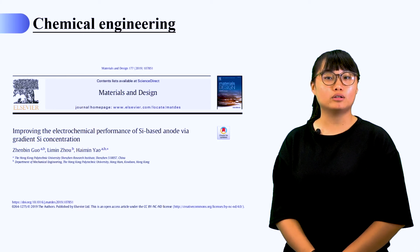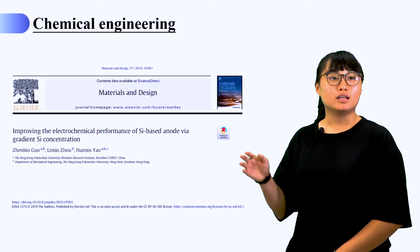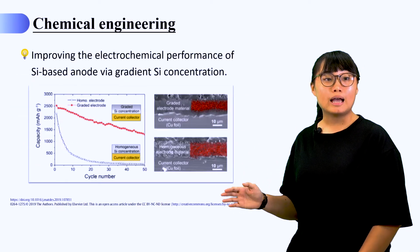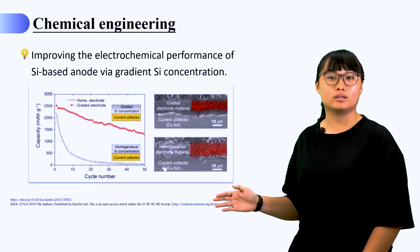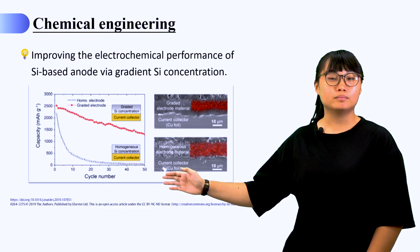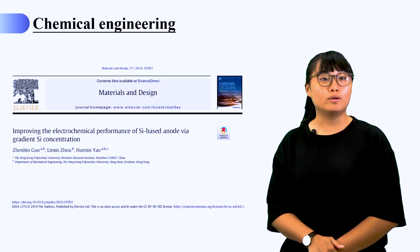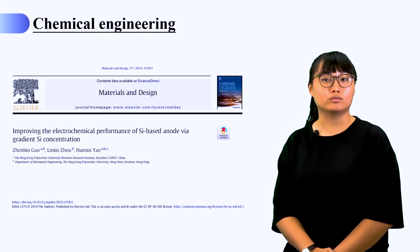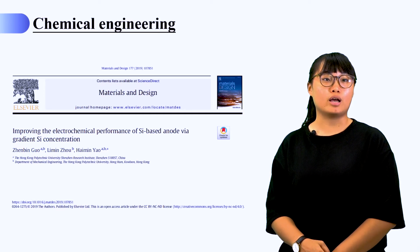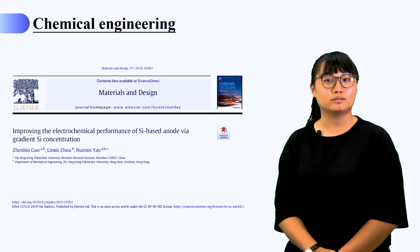This is an example article from chemical engineering. More specifically, it is from materials and design research area. As we can see in a graphical abstract, the design material will be applied on testing batteries. And it is an open access article. So we will show portions of the article to illustrate how to find different components in the further lessons.